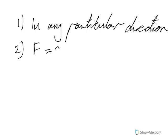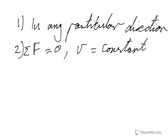The other thing to note is that if the sum of the forces equals zero, then your velocity equals a constant. And it says in brackets there it may be non-zero — meaning the object can still be moving at a steady speed.